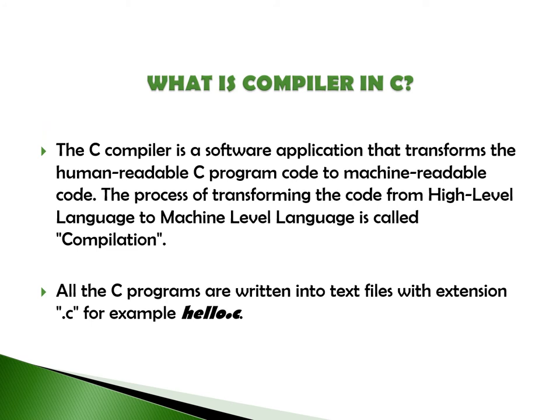The next topic is: what is a compiler? The C compiler is a software application that transforms human-readable C program code to machine-readable code. The process of transforming code from high-level language to machine-level language is called compilation. All C programs are written into a text file with the extension .c — for example, hello.c.